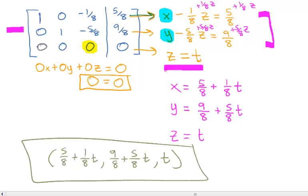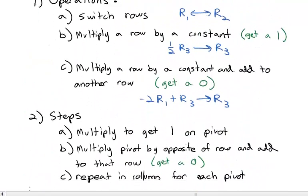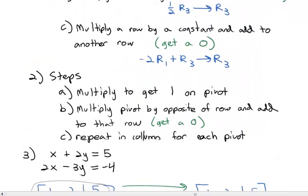This is a brand new process unlike anything we've seen before. First multiply to get a 1 on the pivot, then multiply the opposite of a row and add to get 0's above and below, and repeat until we have reduced row echelon form. This takes practice to master — show your work, keep it clean and organized, and come to class tomorrow with questions.